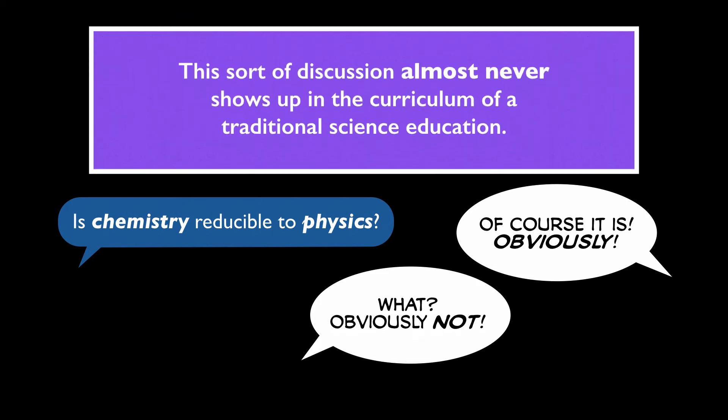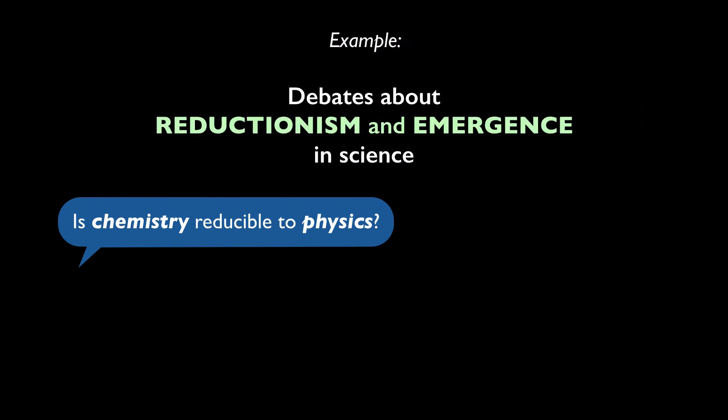Now, this is the sort of discussion that almost never shows up in the curriculum of a traditional science education. It's treated as a philosophy of science question rather than a science question. But that's a silly distinction to draw. It's both a question for science and a question for the philosophy of science. In the case of the relation between physics and chemistry, the issue might seem to be of merely academic interest. But the general question of how one domain of science relates to another can make a real difference to how we view the world and how we view science.